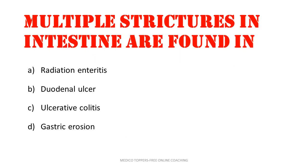Multiple strictures in the intestine are found in: radiation enteritis, duodenal ulcers, ulcerative colitis, or gastric erosion. The answer is radiation enteritis. We can see these multiple strictures in case of cancer patients after radiation most commonly.